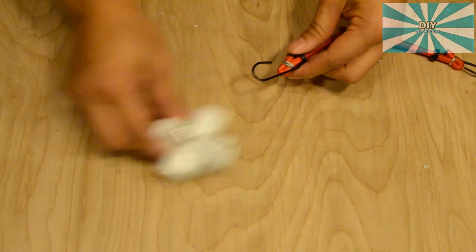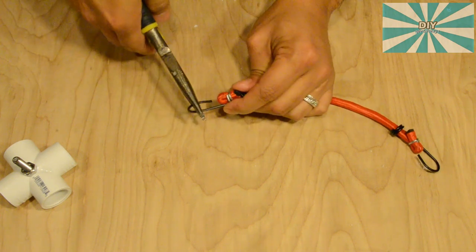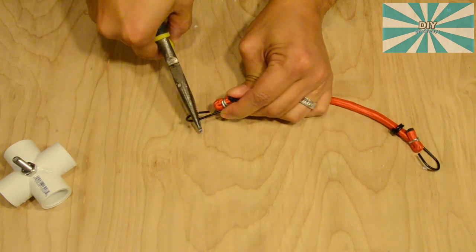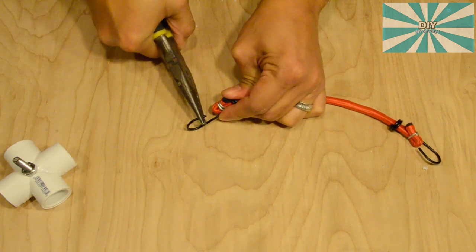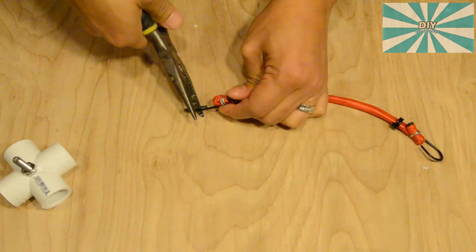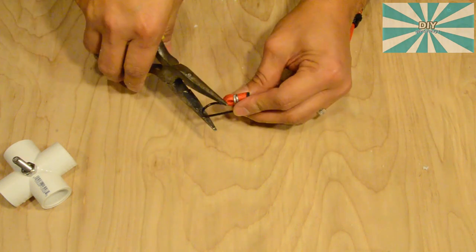Now take the bungee cord and bend the hook so it's narrow enough to fit through the cross tee. Repeat this with the remaining hooks.